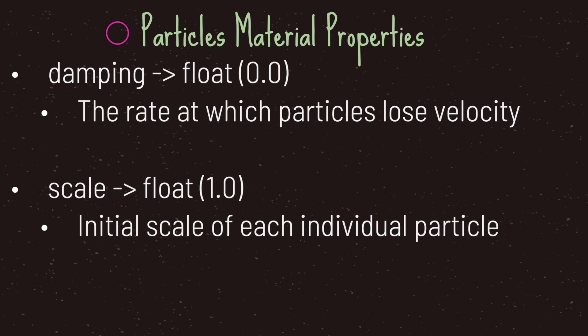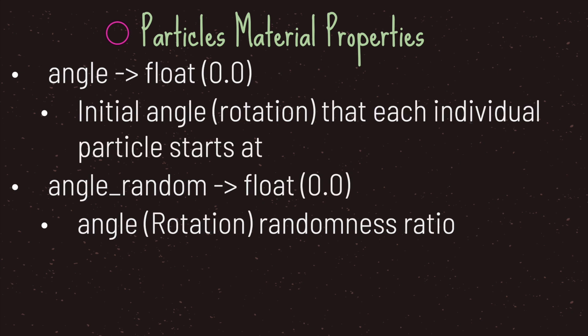The damping property is the rate at which particles lose velocity — by default this value is set to zero. You also have a scale property, which by default is set to one, meaning no scale is applied. This is the initial scale of each individual particle. The angle property is the initial angle rotation that each individual particle starts at. On top of that, you can set the randomness of angles through the angle random property, which by default is set to zero and sets the rotation randomness ratio.